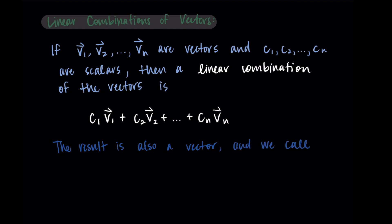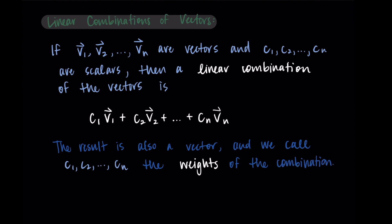We have a special name for the c1 through cn values — we call these the weights of the combination. You can think of them as determining how much of each vector we're taking into account. So c1 decides how much we scale the first vector, c2 decides how much of the second vector we take, and so on.